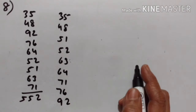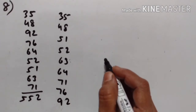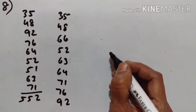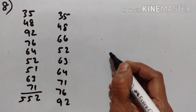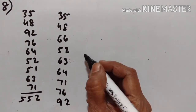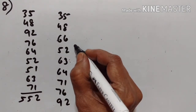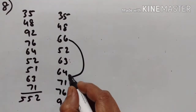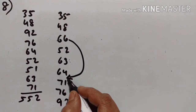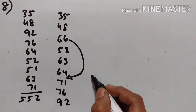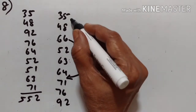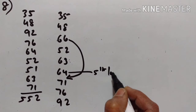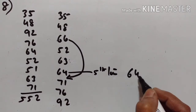Next question: if 51 is replaced by 66, what will be the new median? 51 is replaced by 66, so 66 will go after 64 in the ordered list. What is the median now? Counting: 1, 2, 3, 4, 5 — this is the 5th term. So 64 is the new median.